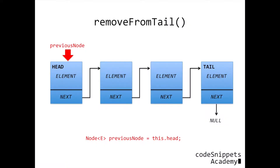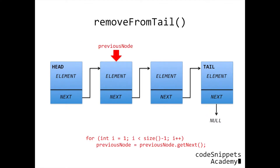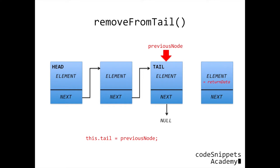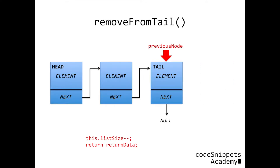To remove from tail, we're going to have a previous node, and we're going to set that to the head. This is going to traverse the list until it gets to the node right before our tail. Then we're going to have a return data variable, which is going to hold the tail's element. We set our previous node's next to null, and the tail is set to the previous node. Then we decrement our list size and return the return data. The Java garbage collector will take care of the previous tail. Since we have to traverse to the end of the list, this will take linear time.